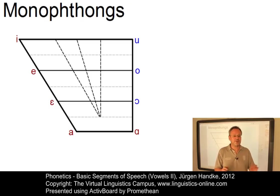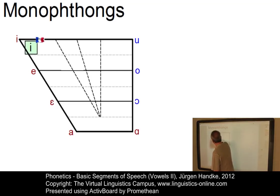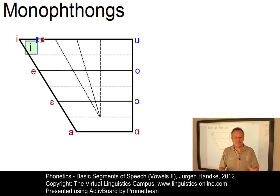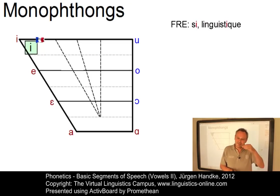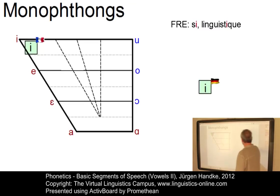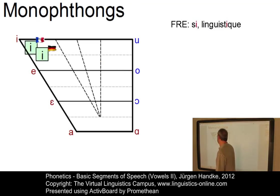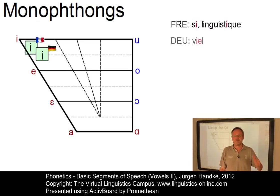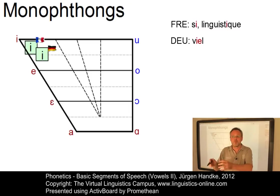Let us illustrate this with the vowel E in three different languages. The E in French is known to be extremely close to cardinal 1 — it is clearly an unrounded high front vowel. Words such as 'si' or 'linguistique' illustrate the high and front tongue position of this E. The E in German is still very high and very fronted, however it is slightly lower than the French one. A keyword would be 'viel', which means 'much' in English, and it is a bit more away from cardinal 1 than the French one.